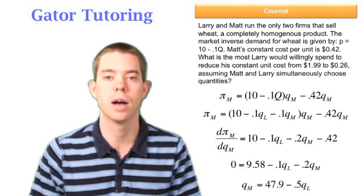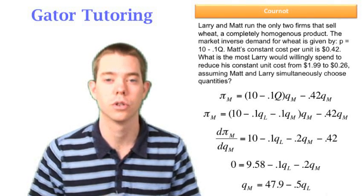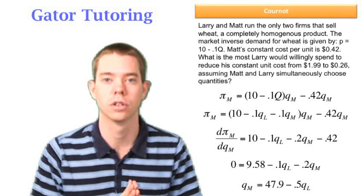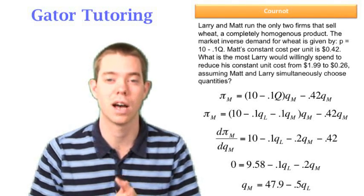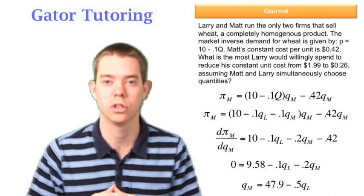Which we find to be QM equals 47.9 minus 0.5QL. So again, we started with Matt's because Larry's costs are changing, but Matt's reaction function is not going to change because his costs are not changing, and the inverse demand for Matt's product didn't change.